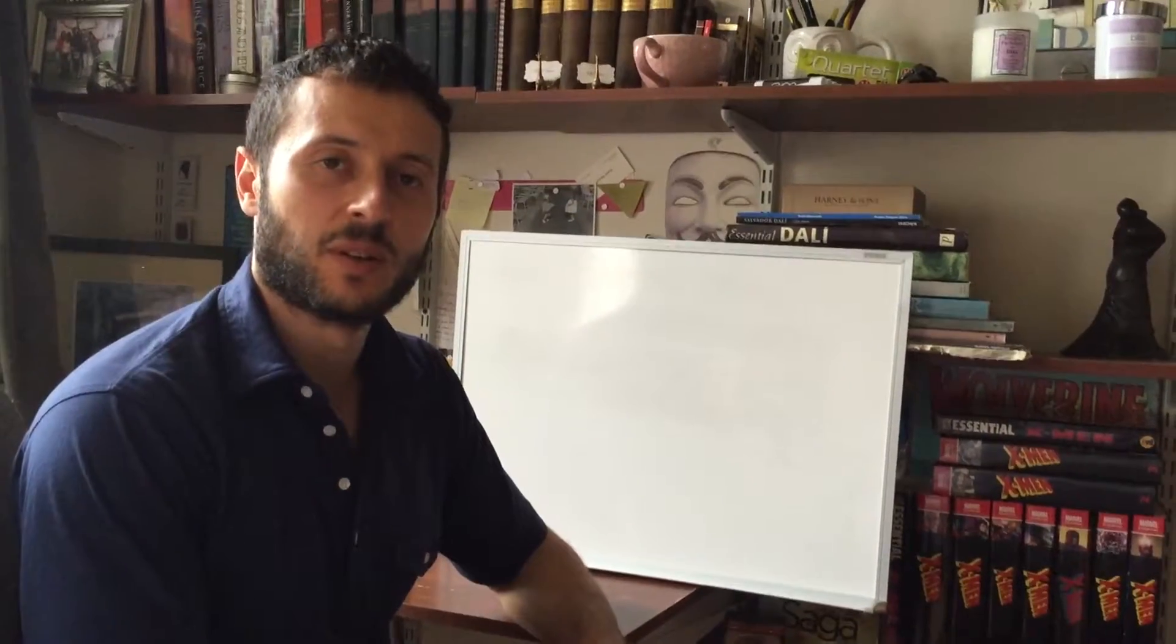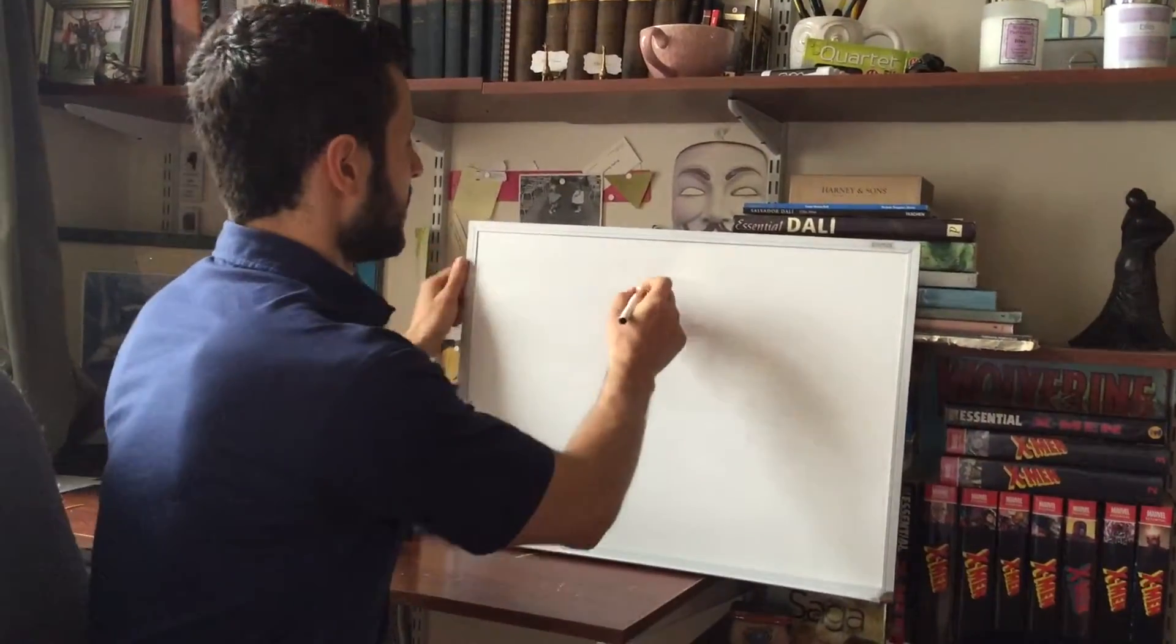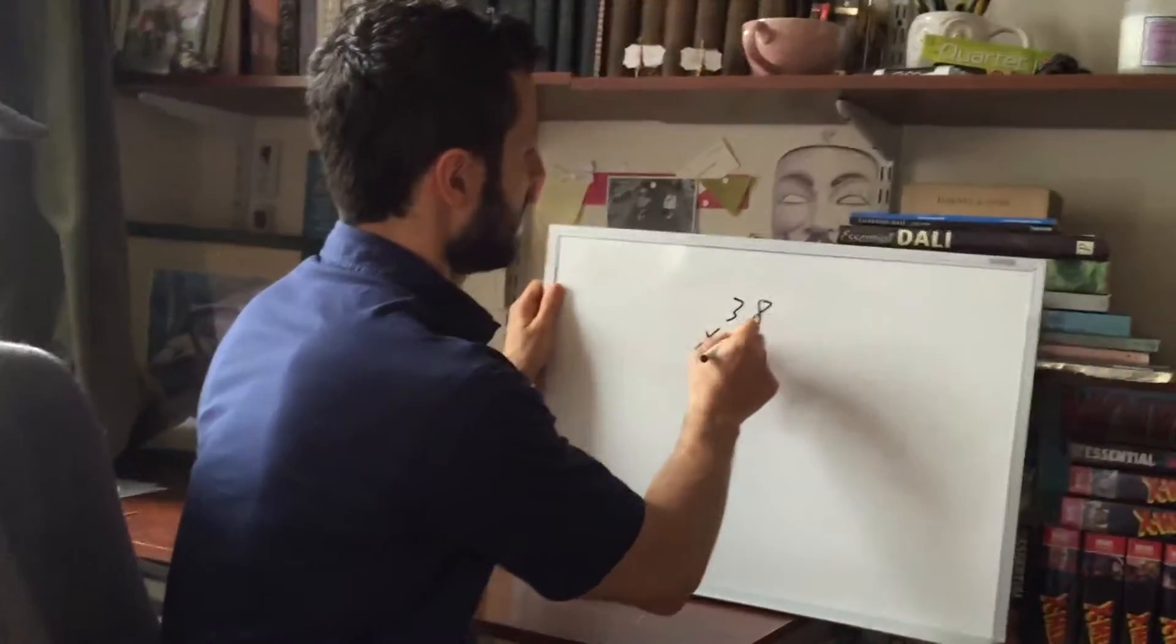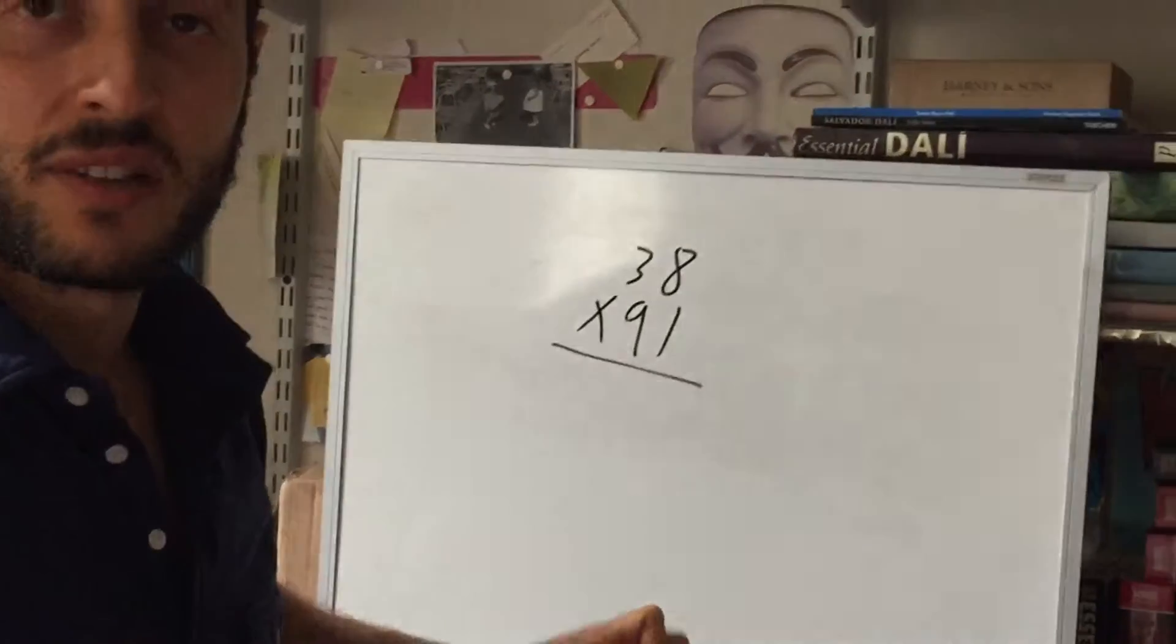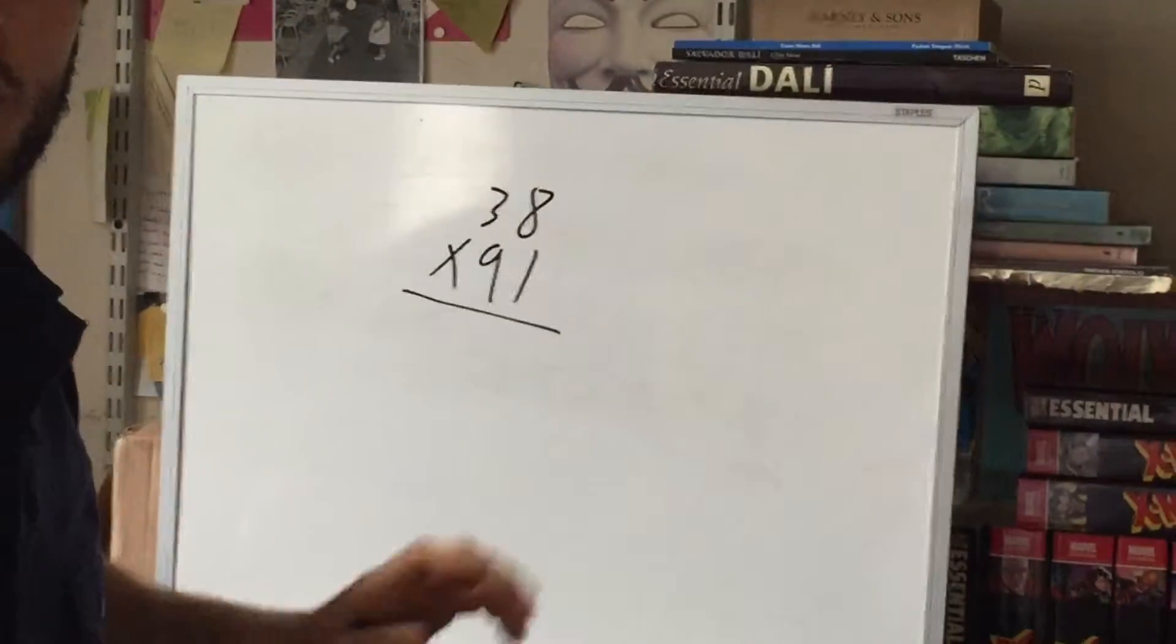Now I forgot to mention in the last video, when we're doing a multiplication such as 38 times 91, even when you're doing this left to right, you may have some trouble. So a few tips.